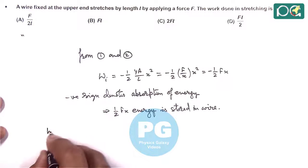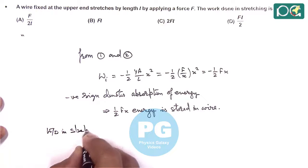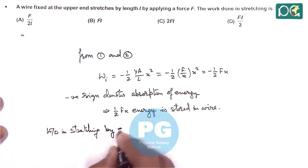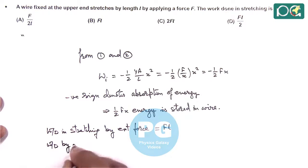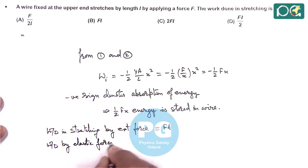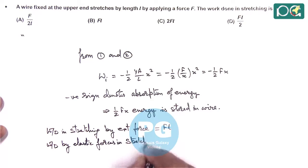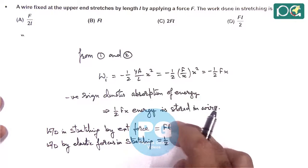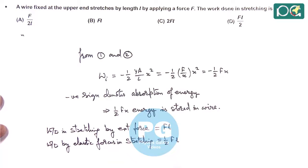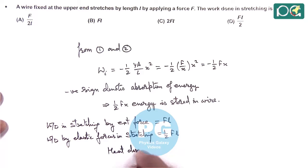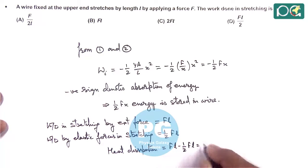Work done in stretching by external force in this question: the answer should be FL. Work done by elastic forces in stretching is half FL. This much amount of energy spent by the external force is against the elastic forces, so half FL is used in stretching and the remaining half FL will be dissipated as heat. Heat dissipation is FL minus half FL, which is also half FL.